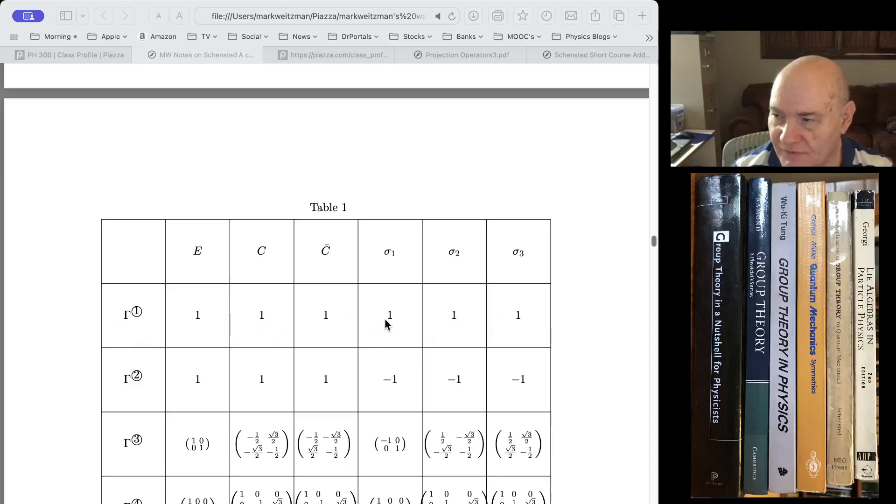The one-dimensional irreducible representation and the two-dimensional irreducible representation. Gamma 1, which is the trivial representation, and gamma 3, which is the two-dimensional representation. But it doesn't have anything with this representation in the group.